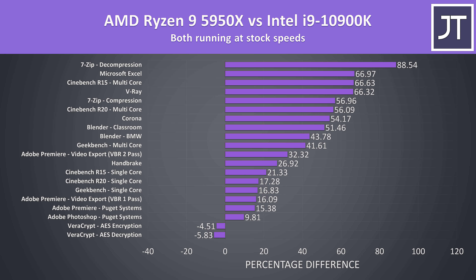The 10900K was only ahead in VeraCrypt; otherwise the 5950X was winning in all of the others tested. We expect the 5950X to win in multicore tests due to the higher core count, but there are some nice wins in single core tests too. In some workloads like 7-Zip and Excel there were huge gains, while others like Photoshop were smaller comparatively, but still 10% better on the AMD option.